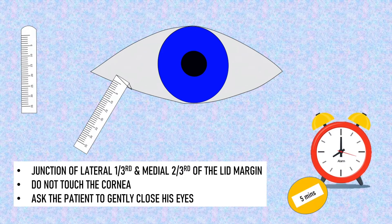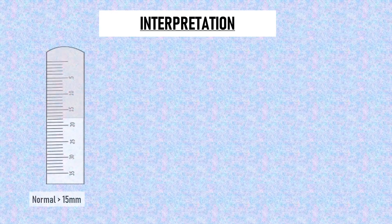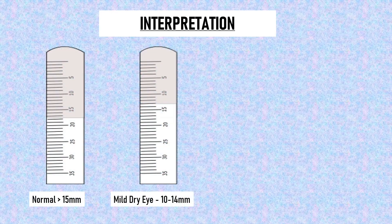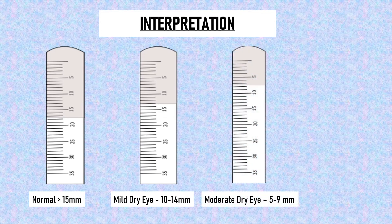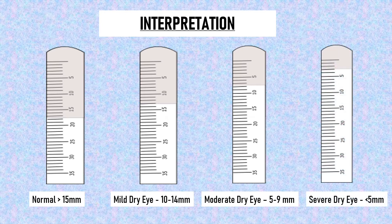Normal reading is more than 15 mm of wetting of the strip after 5 minutes. Mild dry eye is 10–14 mm of wetting. Moderate dry eye is 6–9 mm, while less than 5 mm is indicative of severe aqueous deficiency. It is also important to note that in almost one-third of elderly patients, lacrimal gland function decreases as part of aging; therefore, readings of more than 10 mm are considered normal in them.